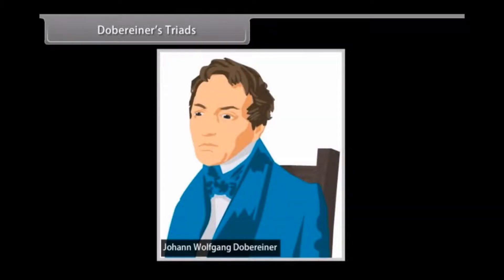Dobereiner's Triads. In 1829, Dobereiner, a German scientist, made groups of three elements each based on their properties. He named them Triads.